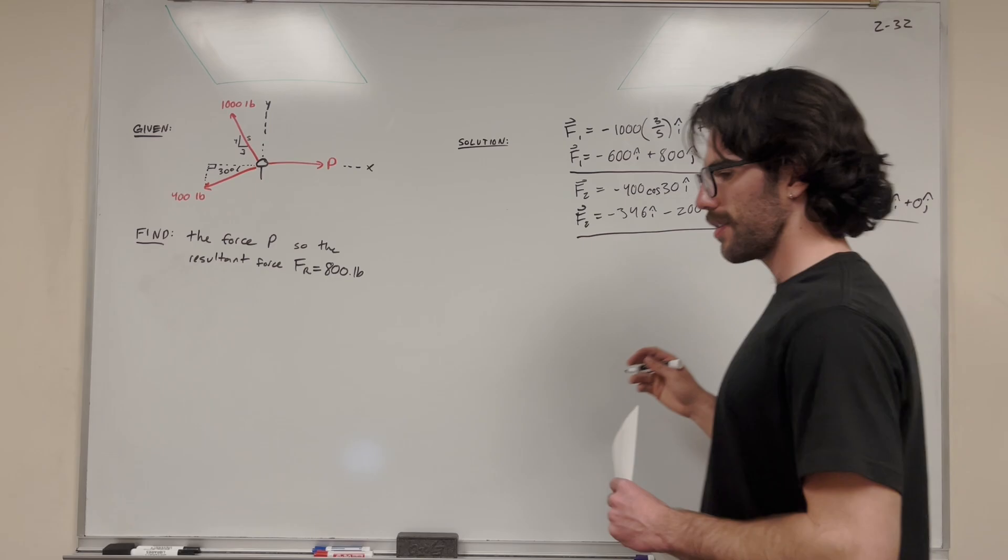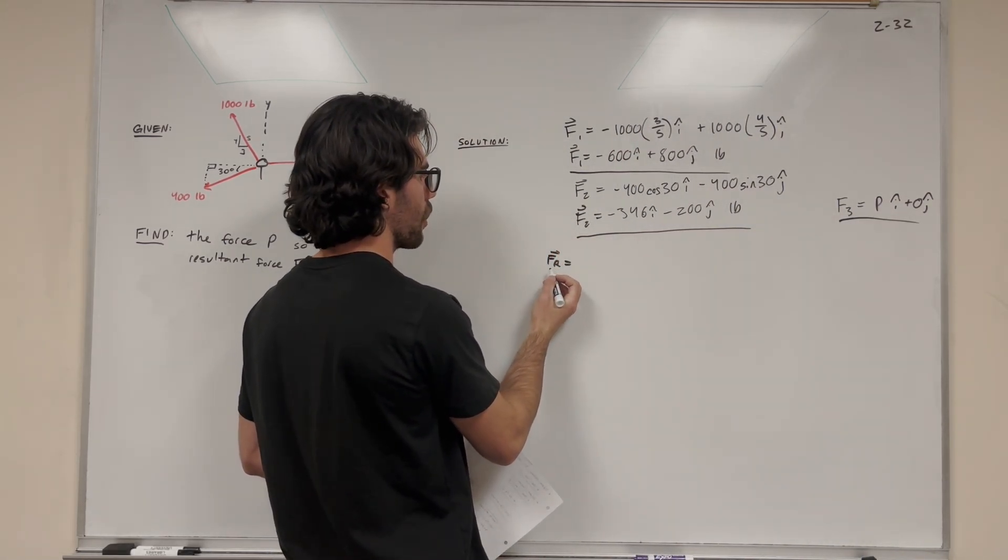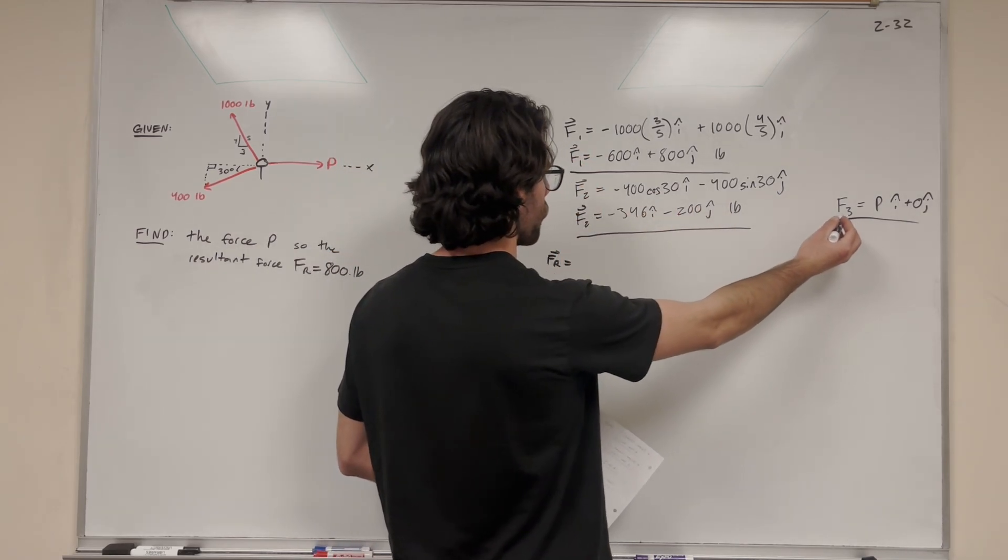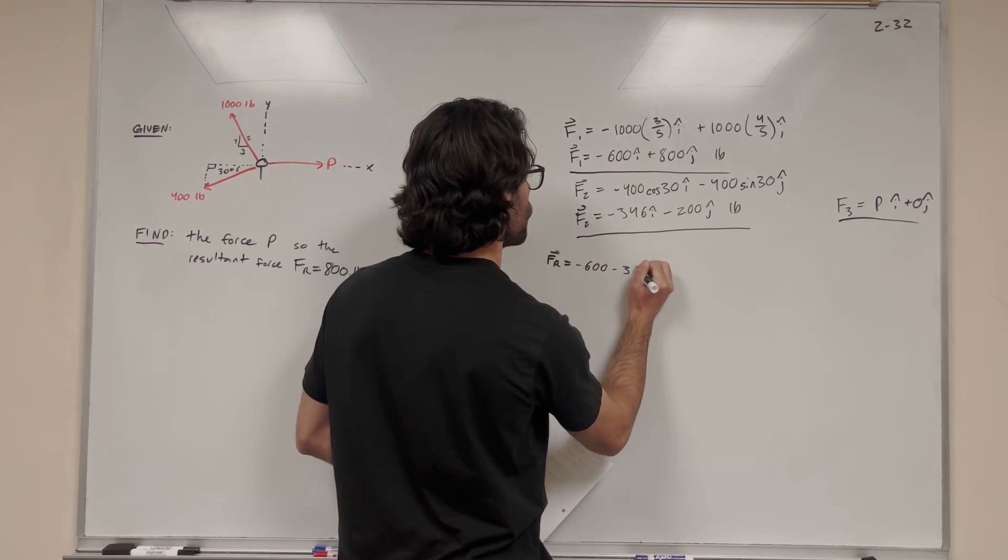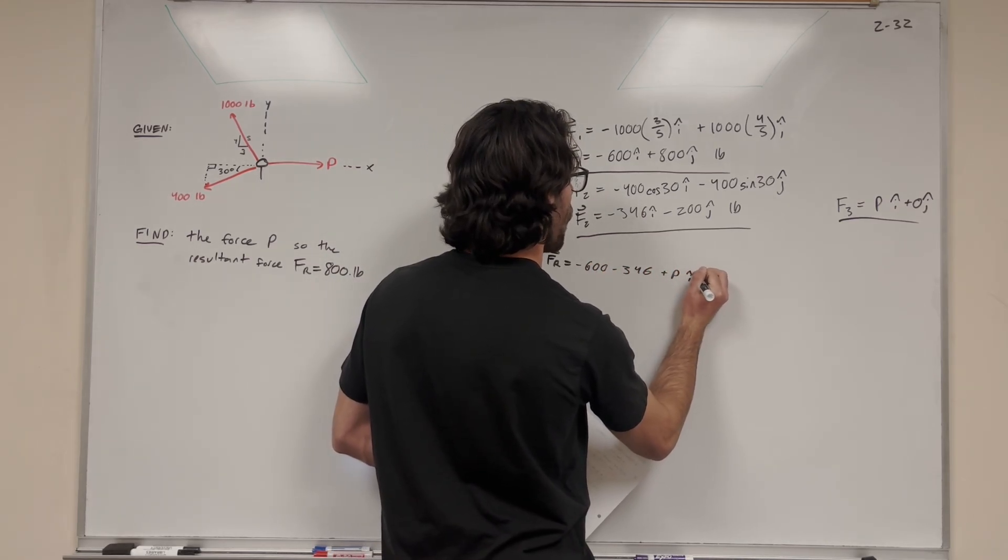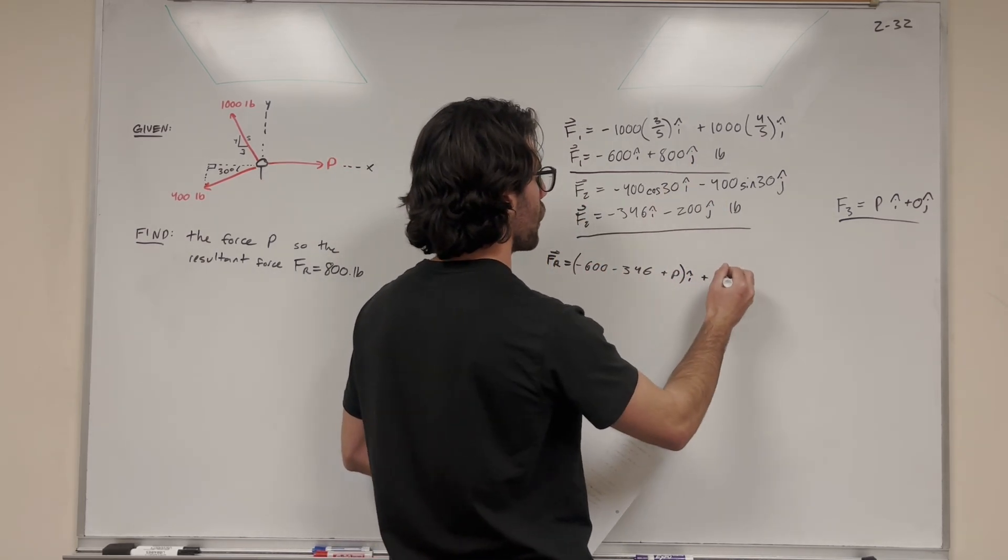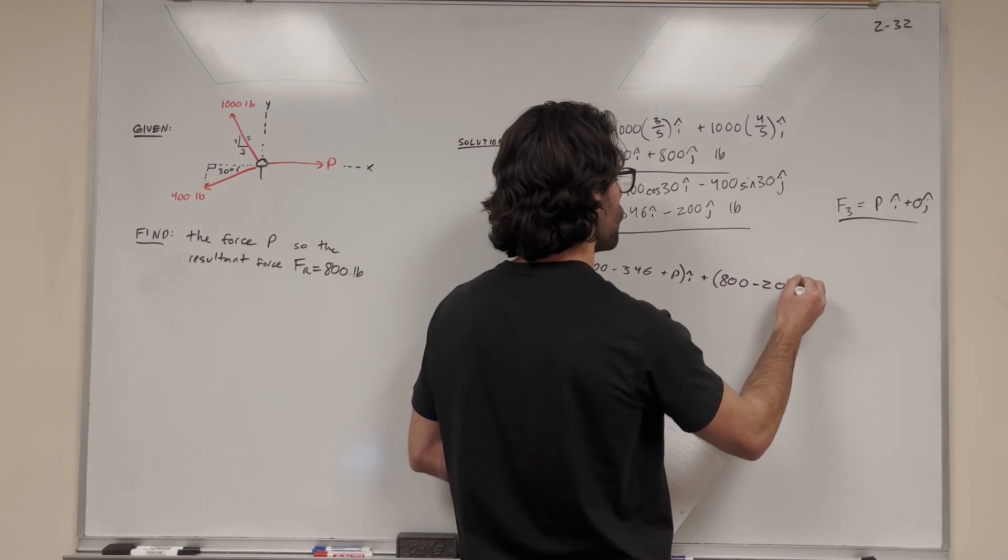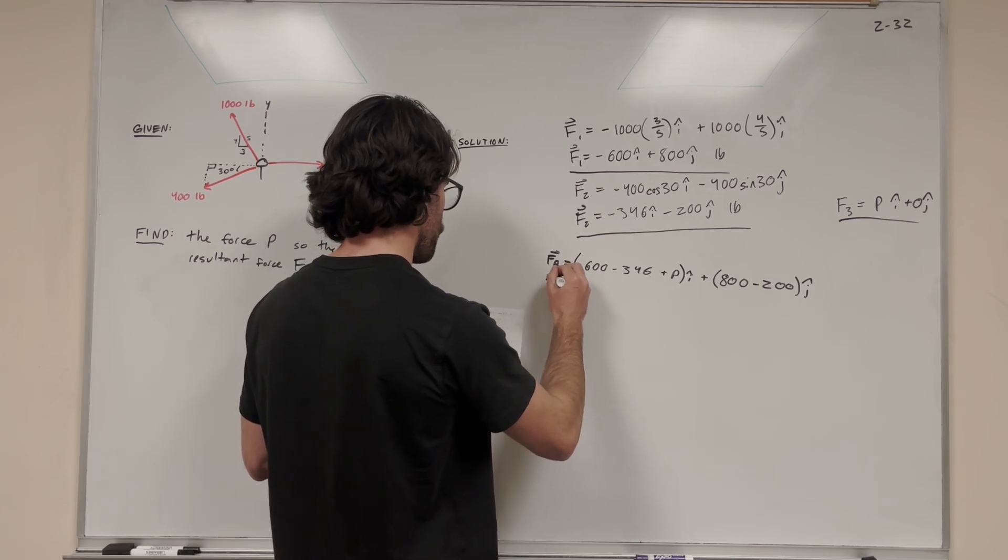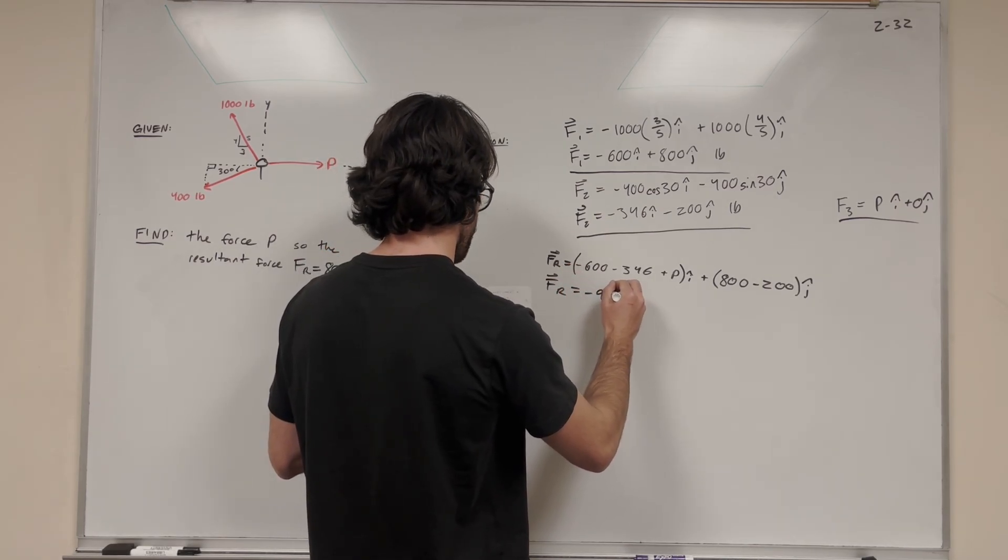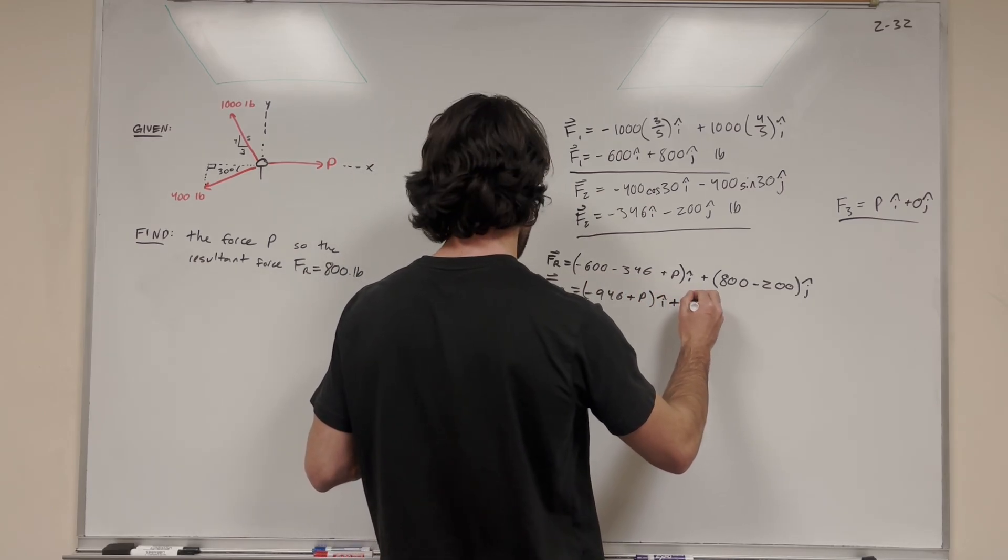If we want the force resultant, we add them together. Force resultant, denoted with an r, equals force 1 plus force 2 plus force 3. We add all the i components: negative 600 minus 346 plus pi. Then add the j component: plus 800 minus 200j. After we solve, we get negative 946 plus pi plus 600j.